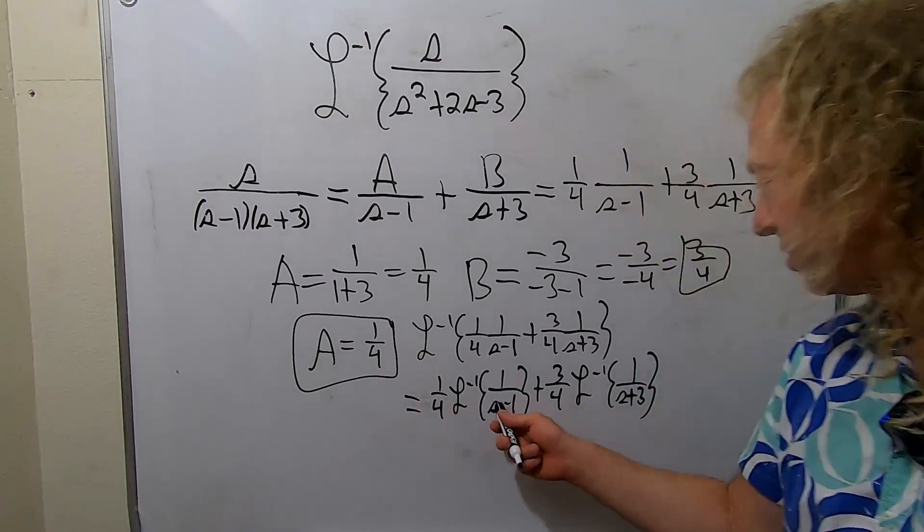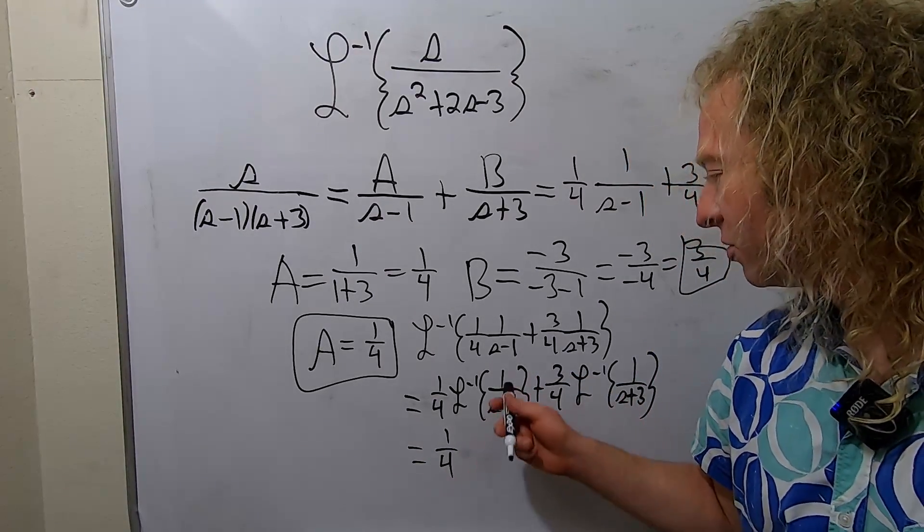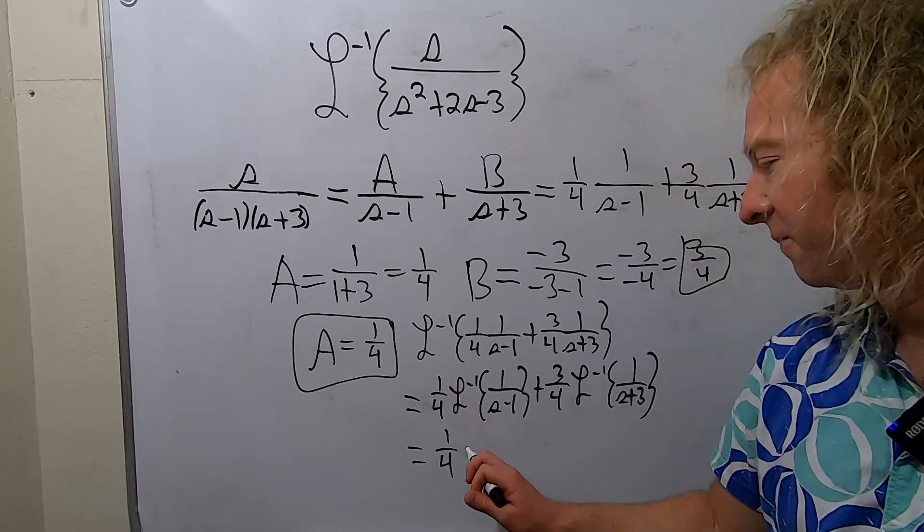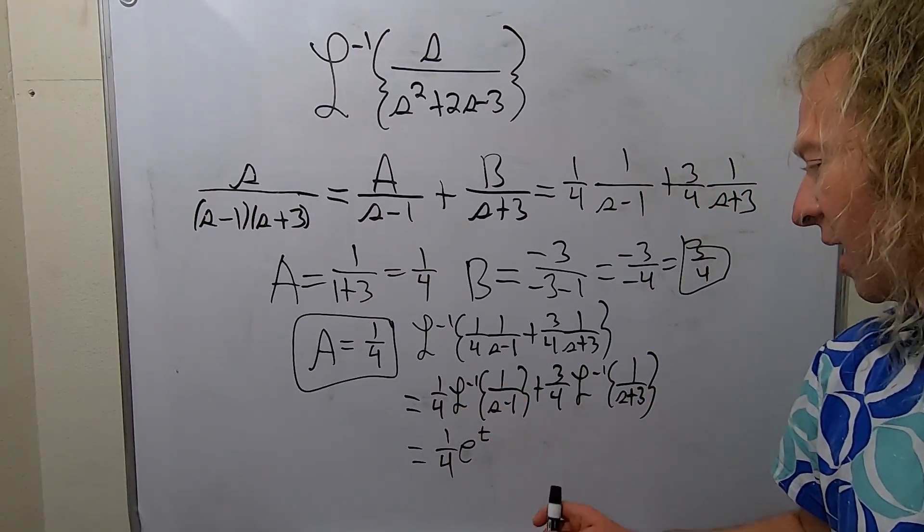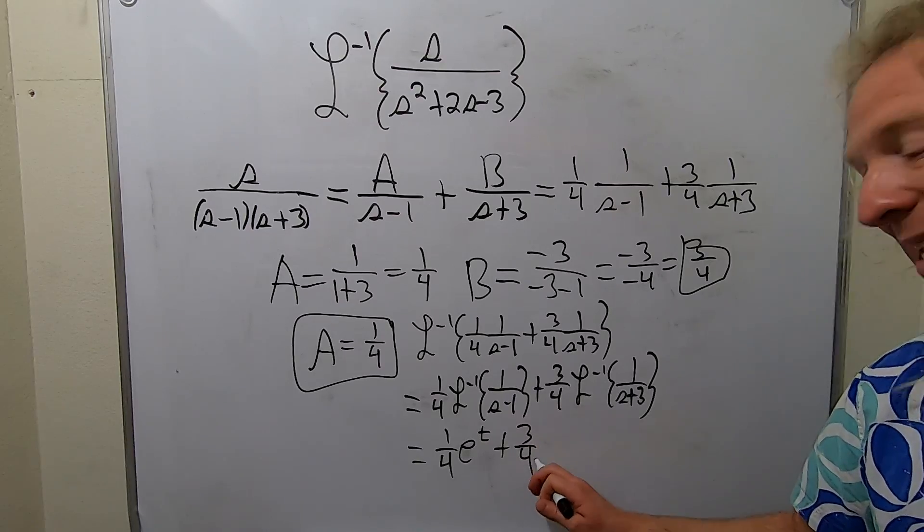All right, good stuff. So now we just use the formula on both of these. This is equal to 1 fourth. So 1 over S minus 1, that's going to give us E to the T. And then here, this is 3 fourths. This is going to give us E to the negative 3T.